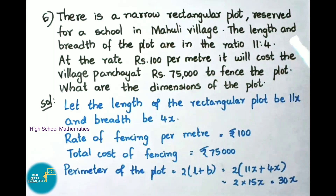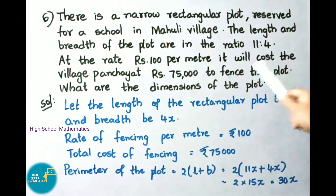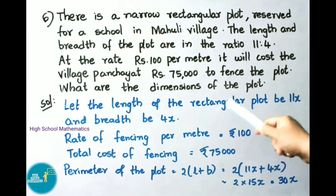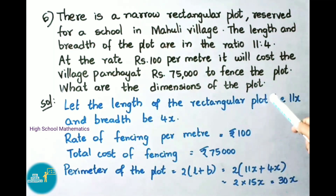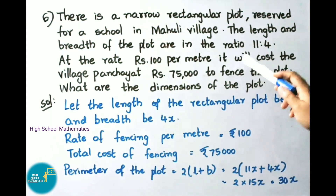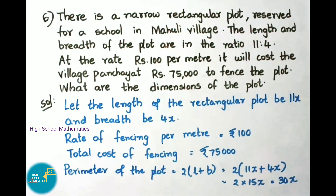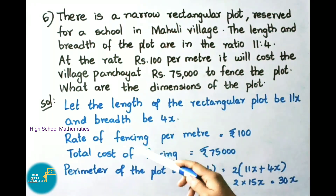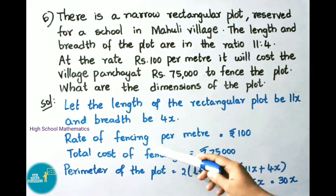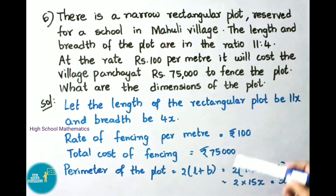The length and breadth of the plot are in the ratio 11:4. At the rate of 100 rupees per meter, it will cost the village panchayat 75,000 rupees to fence the plot. What are the dimensions of the plot? The rate of fencing is 100 rupees per meter and total cost is 75,000 rupees. Let the length be 11x and the breadth be 4x.